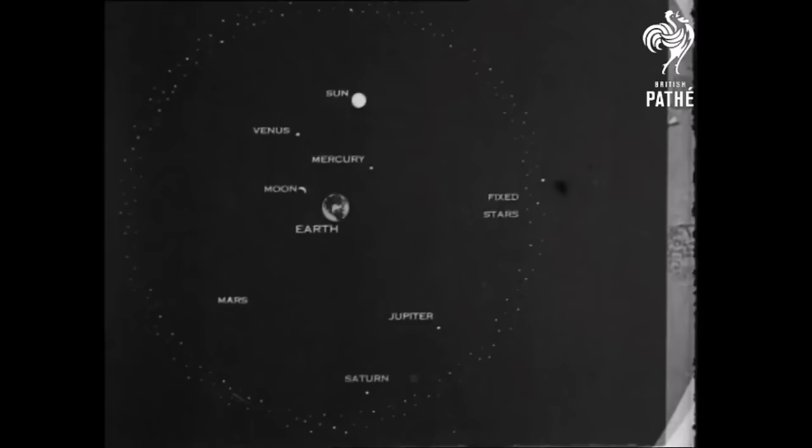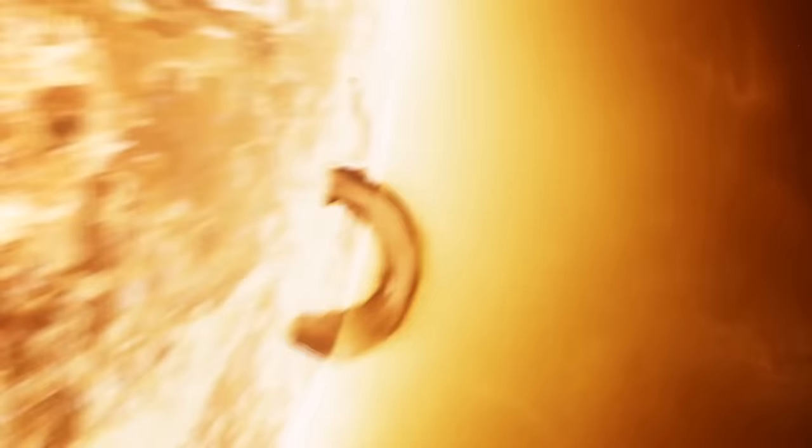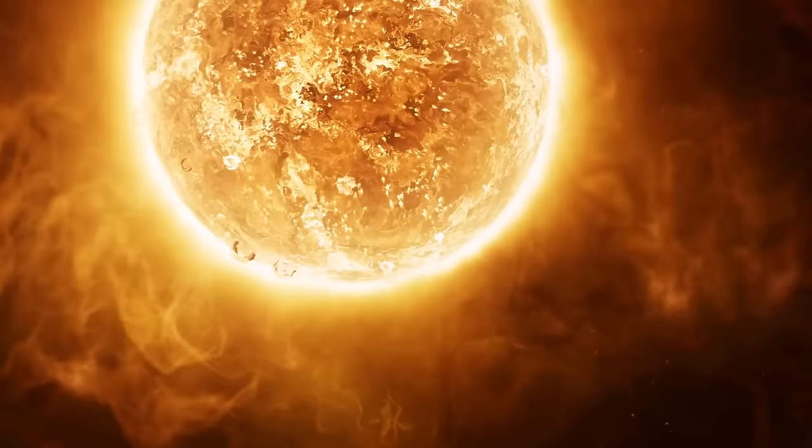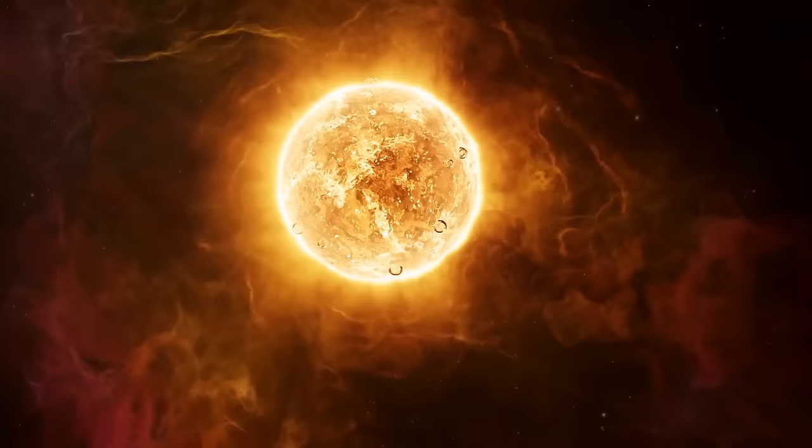A Polish mathematician and astronomer, Nicolaus Copernicus, dared to challenge the geocentric view in the early 16th century. Copernicus proposed a heliocentric model, suggesting that the sun, not the Earth, was at the center of the solar system. His groundbreaking work, De revolutionibus orbium coelestium, set the stage for a new understanding of the cosmos.